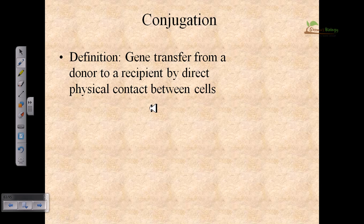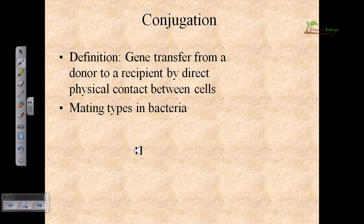Conjugation means the gene transfer from one donor to a recipient by direct physical contact between the cells. We can see in this picture that there is a direct contact between two bacterial cells — bacteria A which is the donor and bacteria B which is the recipient — and they interact by making a tunnel through structural proteins called pili, through which genetic material is transferred.